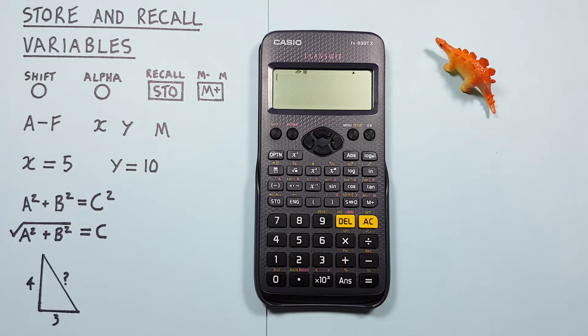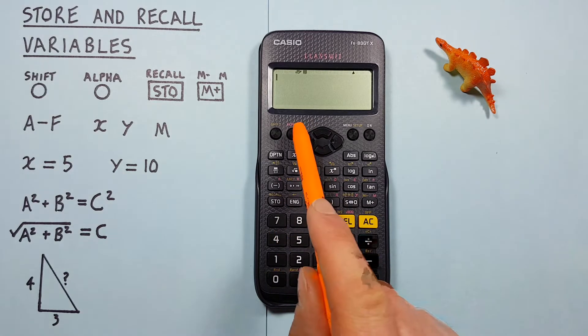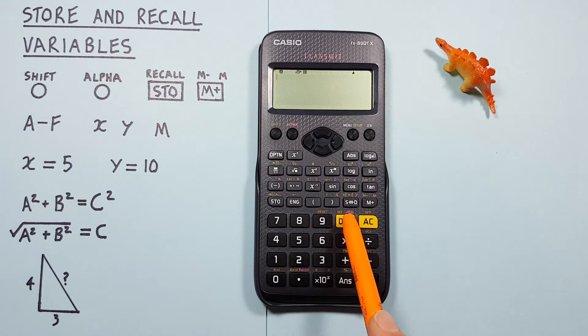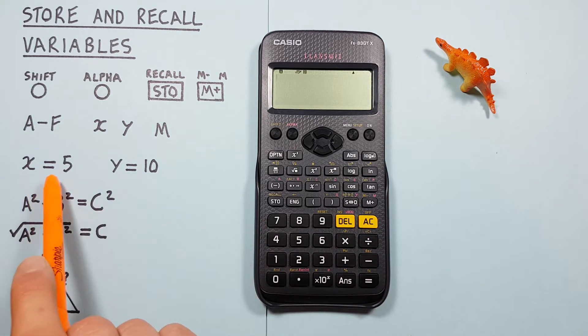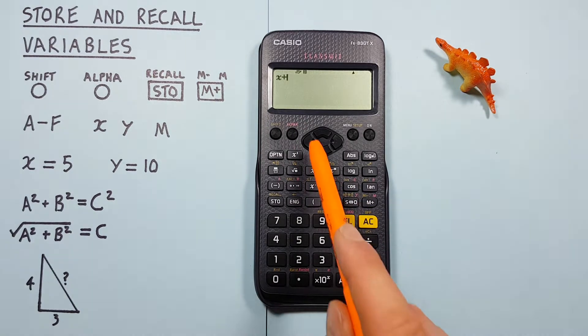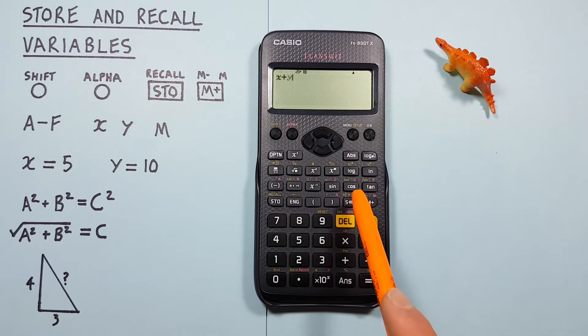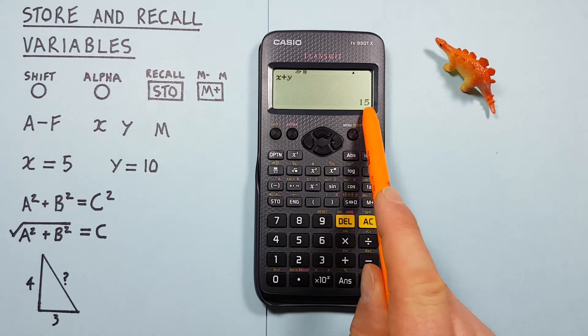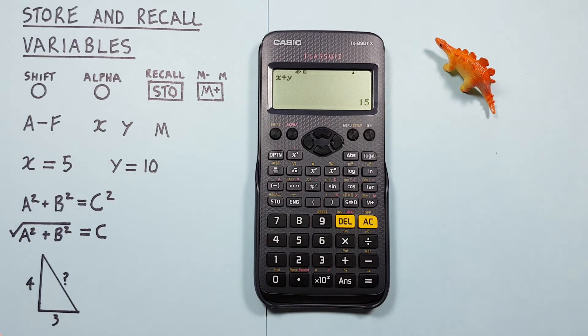If we want to recall these for use in formulas we can do this by pressing the alpha key and then selecting the memory slot. So if we do X plus Y, we press alpha and then the X plus alpha Y equals and we see we get the result of 15, which 5 plus 10 is correct.